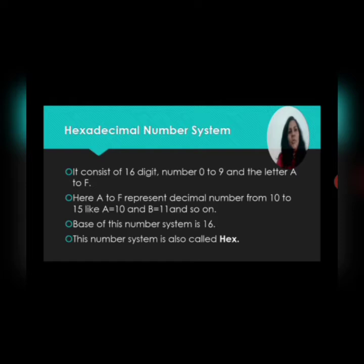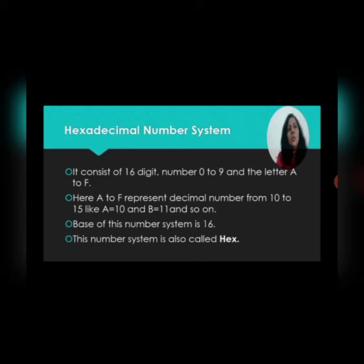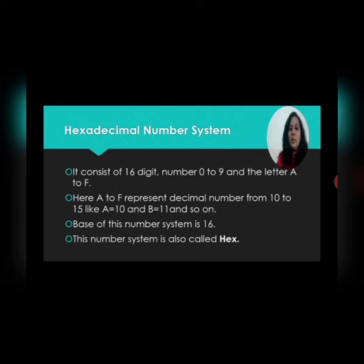The hexadecimal number system consists of 16 digits: numbers 0 to 9 and the letters A to F. Decimal includes 10 digits from 0 to 9, binary consists of only 2 digits — 0 and 1 — octal consists of 8 digits from 0 to 7, and hexadecimal consists of 16 digits: 0 to 9 and then letters A to F. These letters represent decimal numbers starting from 10 to 15, so A equals 10, B equals 11, C equals 12, and so on.